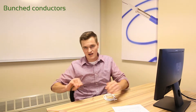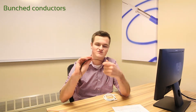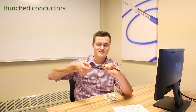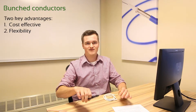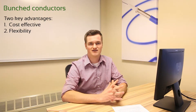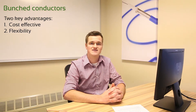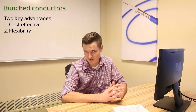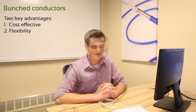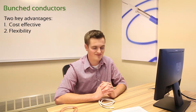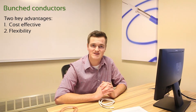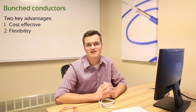We'll start off with the bunched. We basically take any number of wires we want, add a twist, and let it form a naturally round OD. There are two key advantages to the bunched conductor: number one being the cost — this is the most cost-effective of all our conductors. The second advantage is that we can make conductors of the same size with different flexibility.